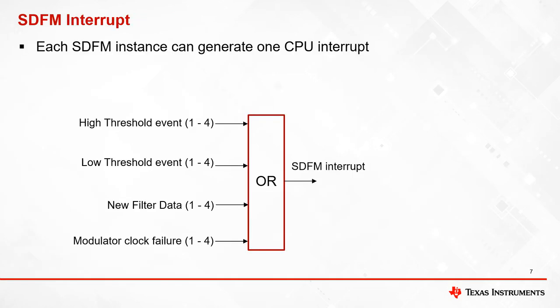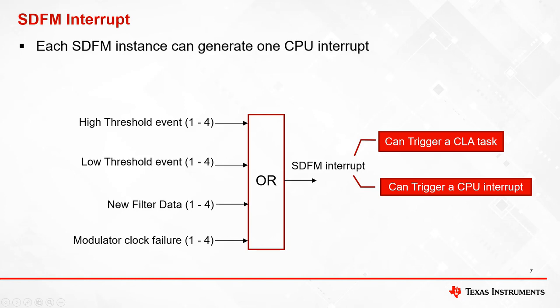Each SDFM instance can generate one CPU interrupt. There are up to 16 different SDFM events which can generate an SDFM interrupt. High or low threshold comparator events, new filter data events from the data filter, and modulator clock failure events from any of the four filter channels can trigger an SDFM interrupt. This interrupt can be used to generate a CLA task or CPU interrupt.